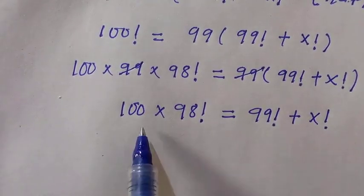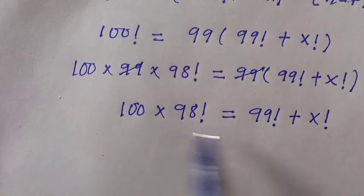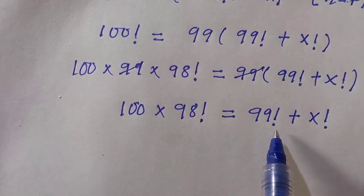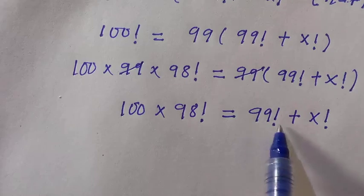We cannot cancel anything here because this is multiplication and here is addition, and what we have here is not the same thing to what we have here.